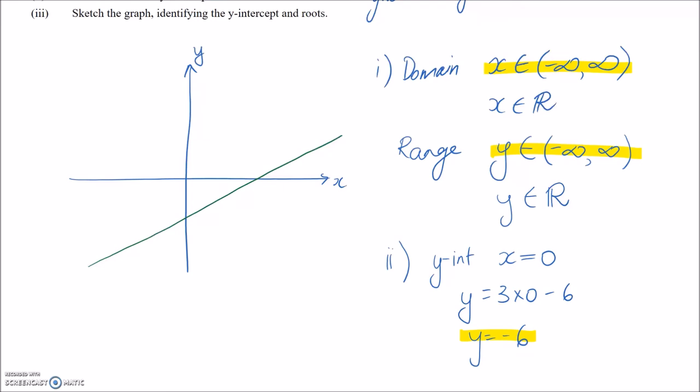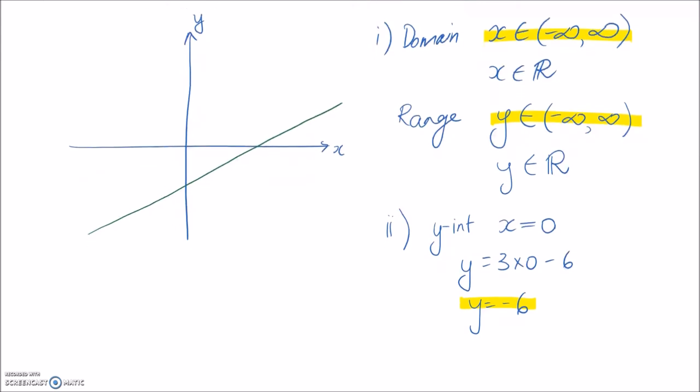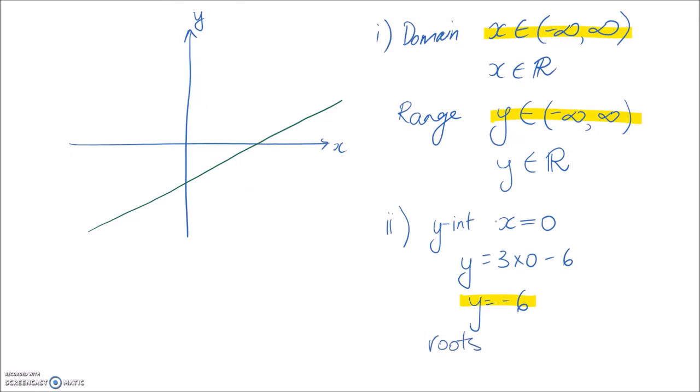So the other one that we needed was the roots. And this is, of course, where your function crosses the x axis. So we're going to be looking for this point here. There's only one of them for a straight line. So for the roots, it's kind of the opposite of this. So we need to set y to be equal to zero in our equation.